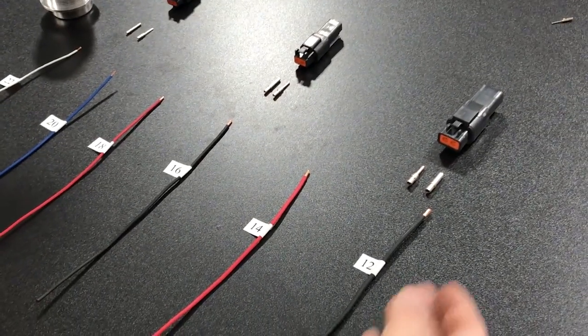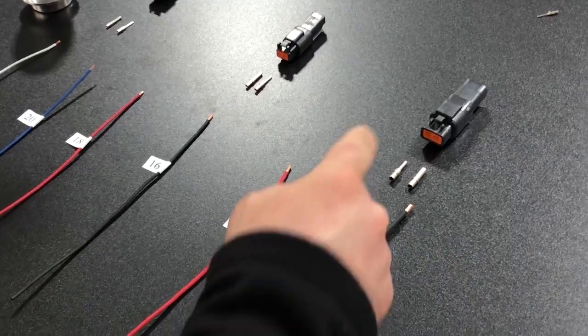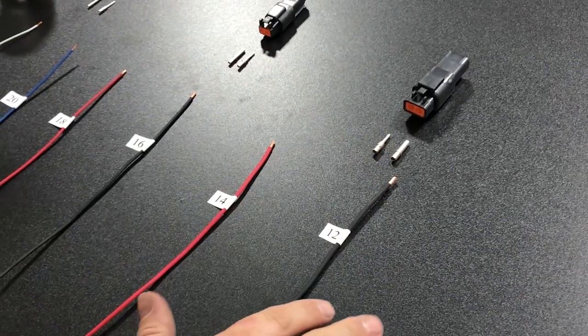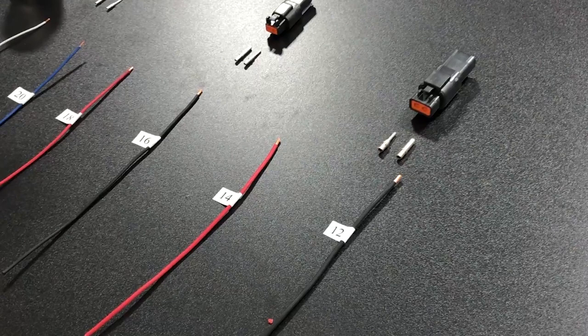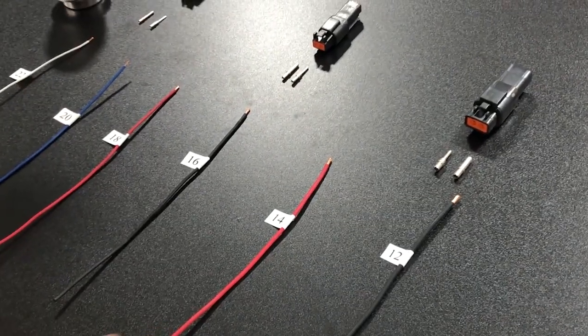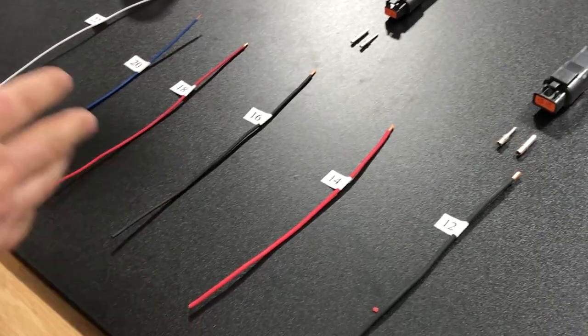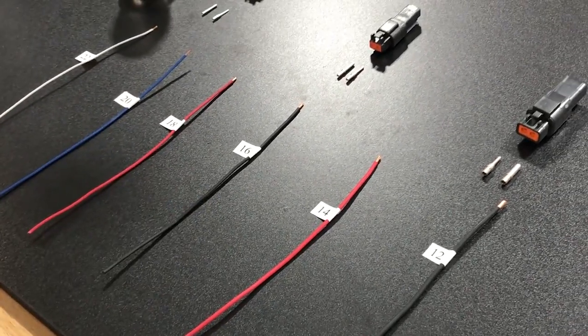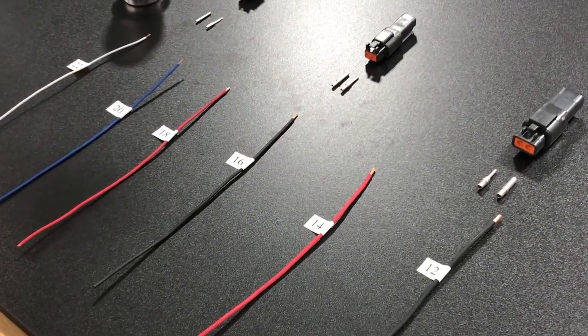And then we have the 12 gauge. The 12 gauge, you can use the 12 gauge pin and socket to crimp either the 12 or the 14. Same settings. So what do we do with our 14 gauge and some of these other kind of in-between sizes? What can we do? Well, let's go ahead and get into that.